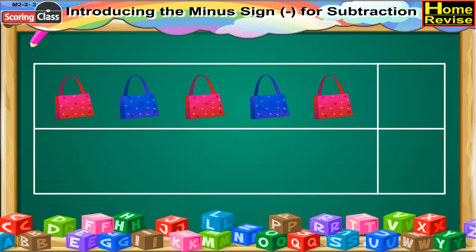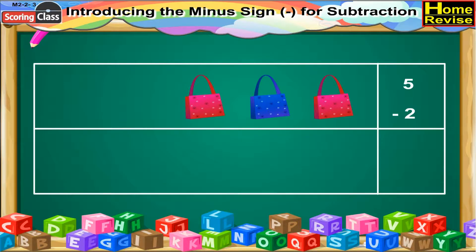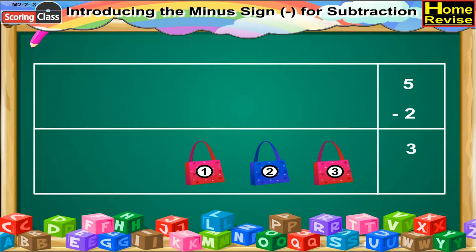In this segment, first let us find the total number of purses. They are one, two, three, four, five. Now, out of five purses, let us see how many purses are removed — that is one, two. So, two purses are removed, which means five minus two. So, the answer would be three. That means three purses are left.